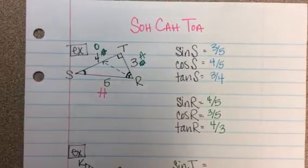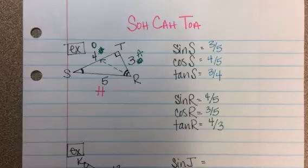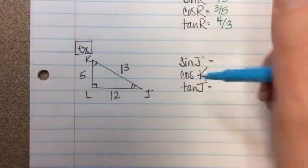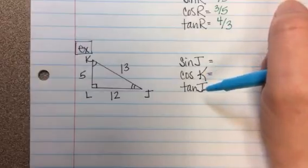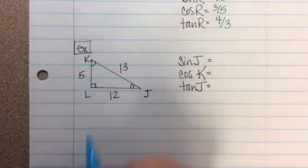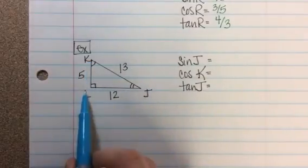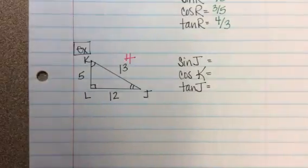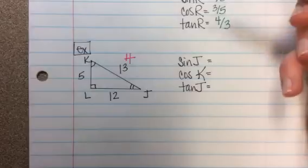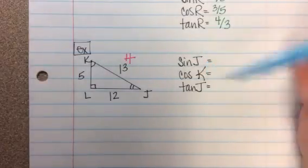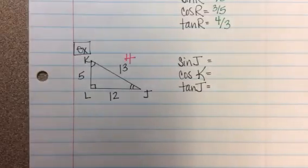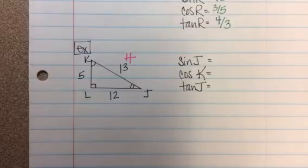All you're doing is setting up those ratios — we're not solving anything yet, but we'll get there. One more example to try on your own: notice the reference angle shifts. For right triangle JKL, where side KL is 5, side LJ is 12, and side KJ is 13, find sine of J, cosine of K, and tangent of J. Your hypotenuse — side KJ, the 13 — never changes, but opposite and adjacent depend on your reference angle. Go ahead and try it; the sub has the answer key.